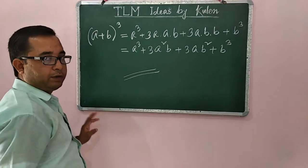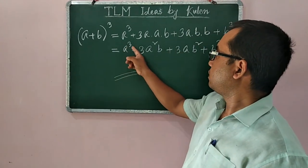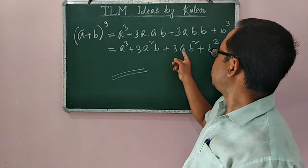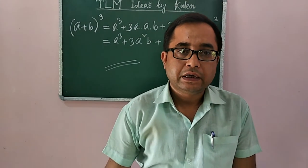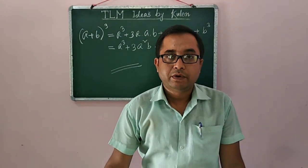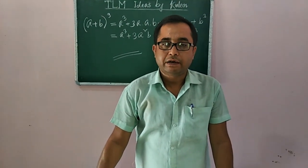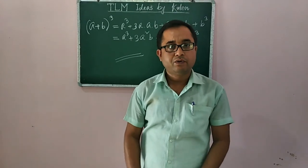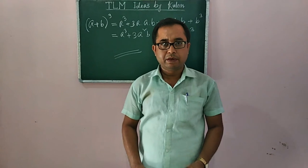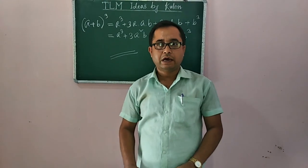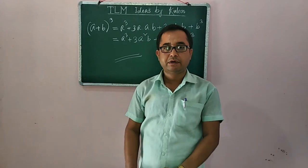And this is the result. It means A plus B whole cube is equal to A cube plus 3A²B plus 3AB² plus B cube. This is one way to prove this mathematical formula, which is very popular and very useful for class 9 and 10. This is just a way to verify this formula using very simple material — wooden blocks that can be used to prove many such formulas.